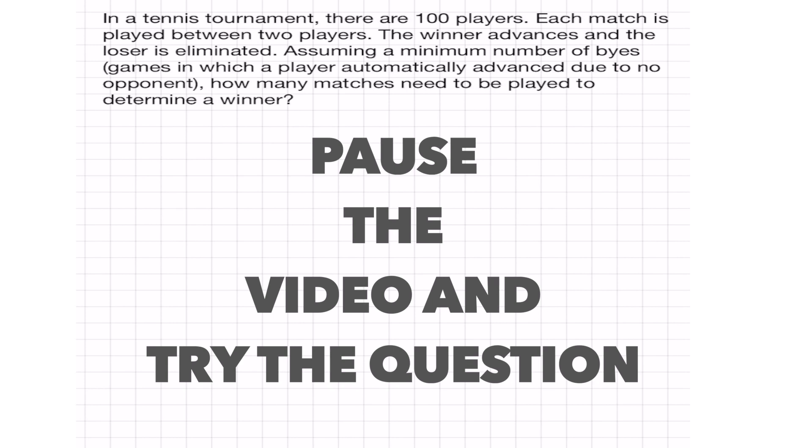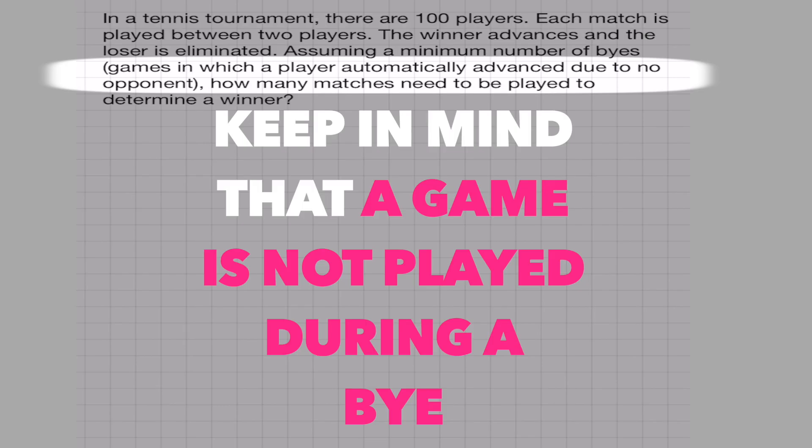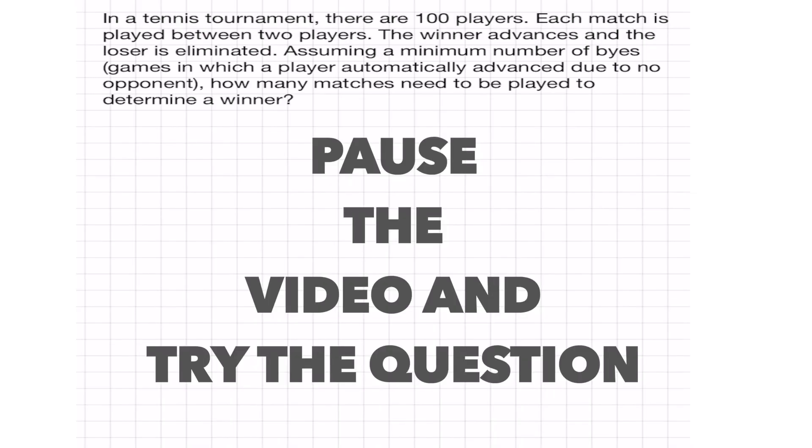In a tennis tournament, there are 100 players. Each match is played between two players. The winner advances and the loser is eliminated. Assuming a minimum number of byes, and a bye is defined as a game in which a player automatically advanced due to no opponent, how many matches need to be played to determine a winner?